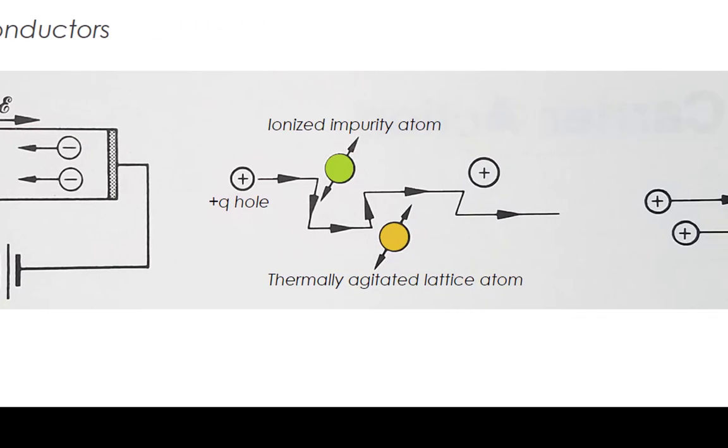Second, however, the accelerated holes and electrons collide with ionized impurity atoms and thermally agitated lattice atoms. This results in the carrier acceleration being frequently interrupted. In this case, the carriers are said to be scattered.